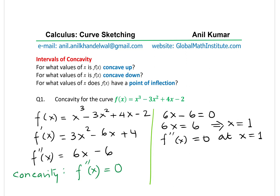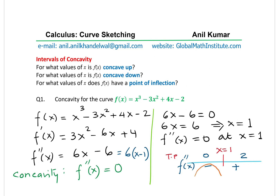Now we test either side of the critical point x = 1. We take a test point on the left side, say 0, and on the right side, say 2, checking whether the second derivative is positive or negative. We can write the second derivative as 6(x - 1). Substituting 0 gives -6, which is negative. Substituting 2 gives a positive result.